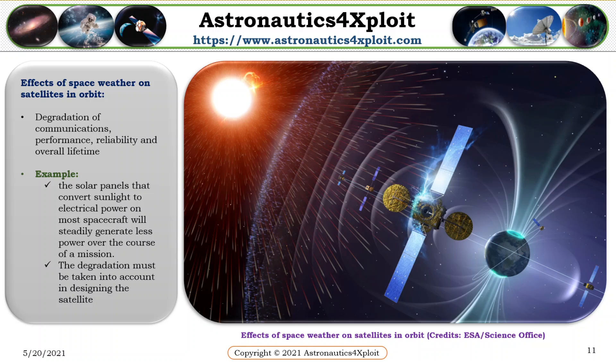Effects of space weather on satellites in orbit include degradation of communications, performance, reliability, and overall lifetime. An example can be found in the solar panels that convert sunlight to electrical power on most spacecraft. They steadily generate less power over the course of a mission, and this degradation must be taken into account when designing the satellite.